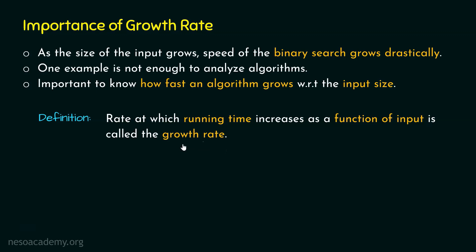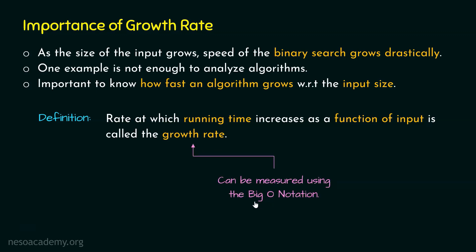But how do we measure the growth rate of an algorithm? In order to measure the growth rate, we can use the Big O notation. Growth rate can be measured using Big O notation. We will understand Big O notation in the next lecture. This notation allows us to measure the growth rate of an algorithm.